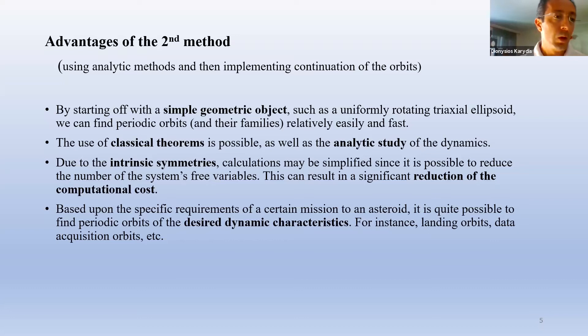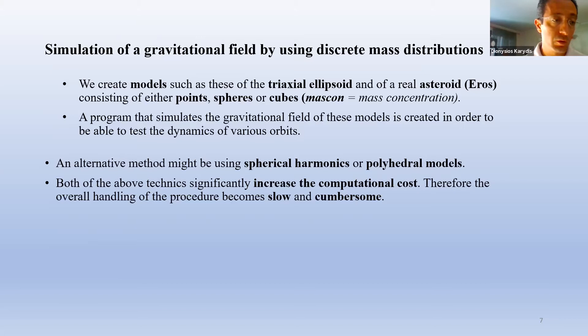We have created a method of modeling any 3D object using mass cons which are in fact point masses that help us simulate its gravitational field by simply adding the individual fields exerted by all the discrete masses. In addition, a method of transforming an ellipsoid consisting of mass cons into the shape of any desired asteroid has been implemented too.